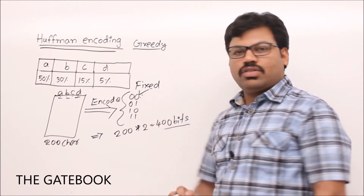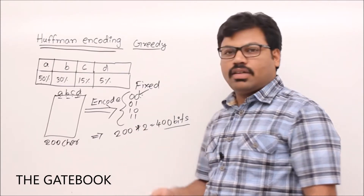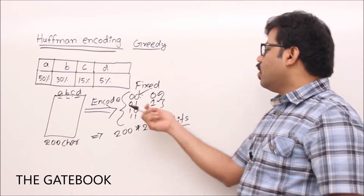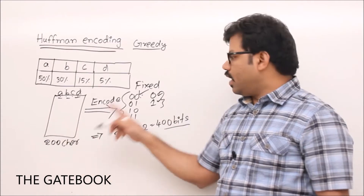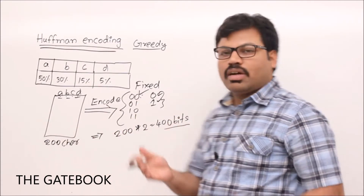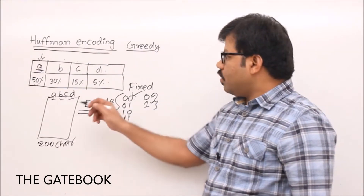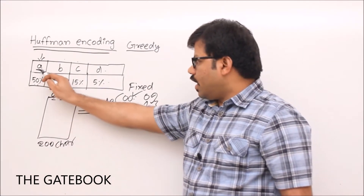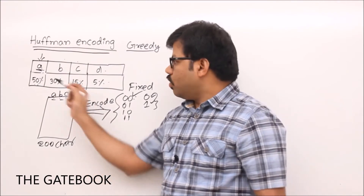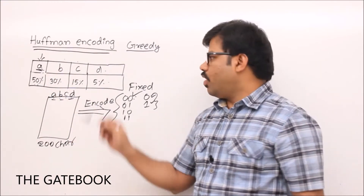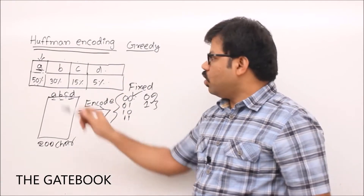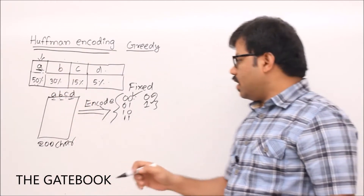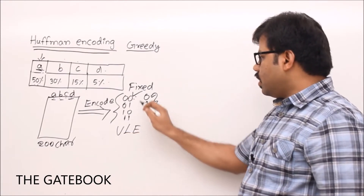Can we reduce 400 bits? Using two bits we can't reduce it, and using more bits makes it worse. To reduce, we'd need only one bit, but one bit only differentiates two patterns — so with four characters, at least two bits are needed. The solution is variable-length encoding: if 'a' is repeated 50% of the time, give it only one bit, and give 'd' three bits. That way, the message size effectively reduces.